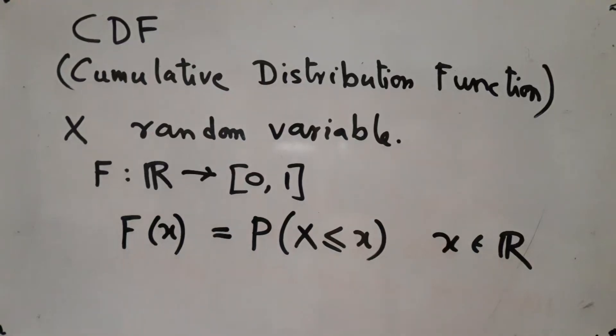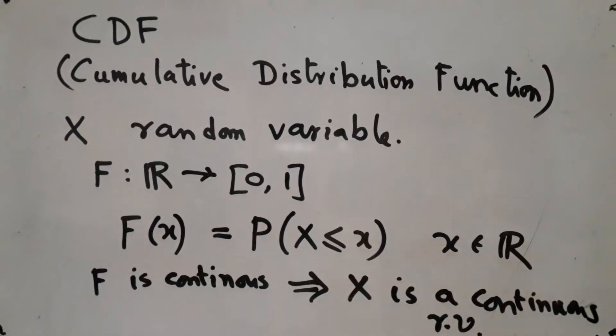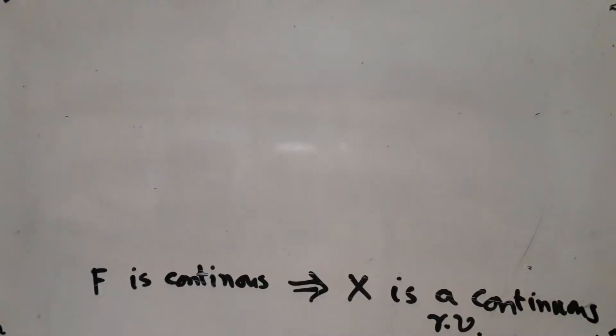This function F may be continuous or discontinuous. If it is continuous, then we say that X is a continuous random variable. This is actually the definition, so I might as well put if and only if.